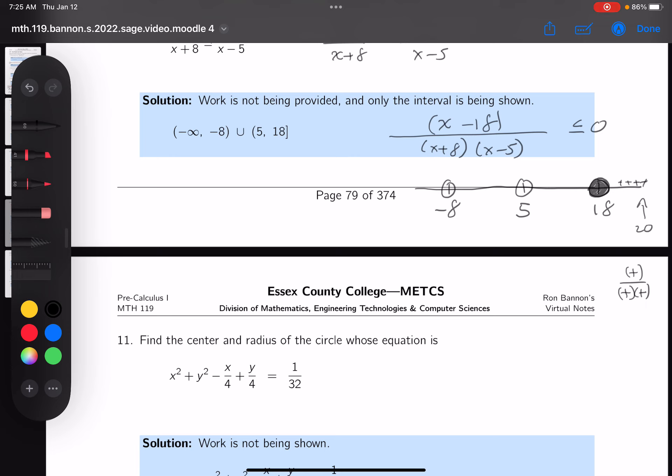That's certainly not less than 0, so I'm not going to shade that in. I'm going to go between 5 and 18 now, and I'm going to pick 10. What do you get on top? A negative number. Get positive, positive. Overall, it's negative. Now, negative numbers are less than 0, so I'm going to shade that in.